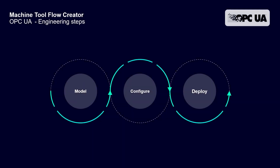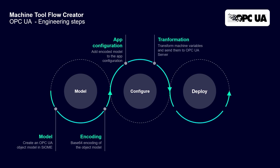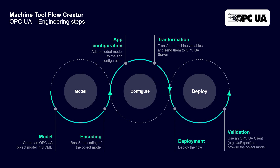When you want to implement your own OPC UA solution, the first step is to do the modeling in the Siemens OPC UA Modeling Editor. Then you will have an XML model and you need to encode that to base64, and we can import this model into the app configuration of the provider application. Then we do the transformation in our provider app, send the data to the OPC UA server, deploy the flow, and watch the results with an OPC UA client.